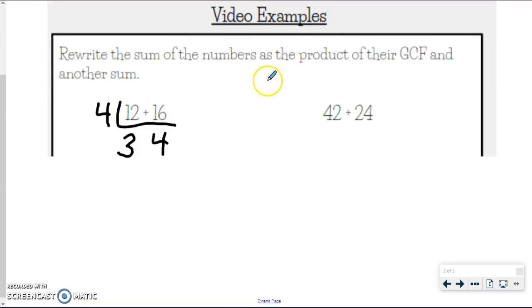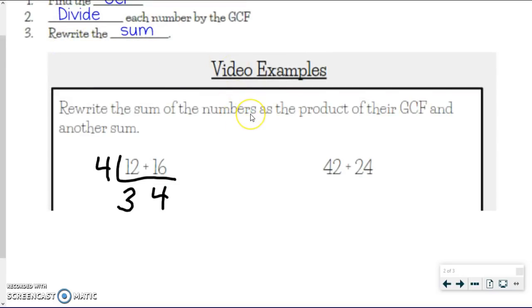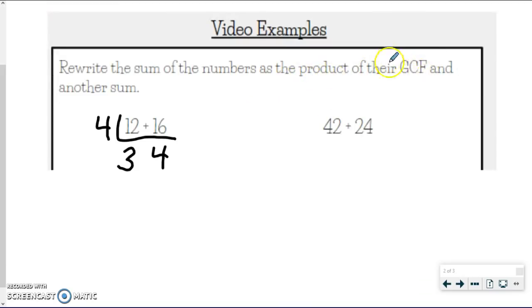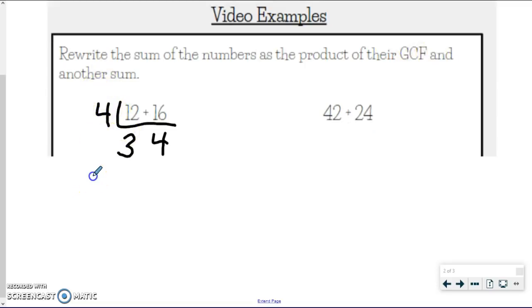Now our last step says rewrite the sum. We need to write it as a product, so multiplying with the GCF and then another sum. So my GCF is 4, so I'm going to write that out here. And to show the product with this other sum, I need to put some parentheses. Inside those parentheses, now that I pulled that GCF out, I'm going to write the leftover numbers, so 3 and 4 inside of my parentheses. I started off with a sum, so I need to end with a sum. So I started off with 12 plus 16, and I rewrote that sum as a product, so 4 times, which is their GCF, and another sum.